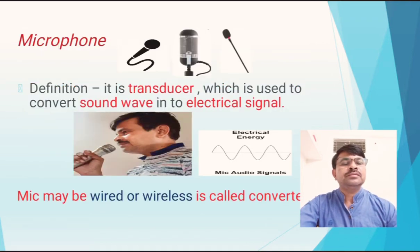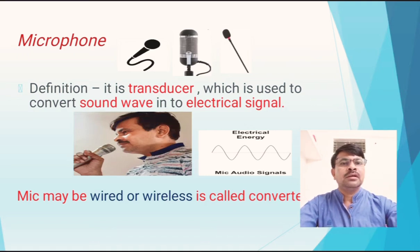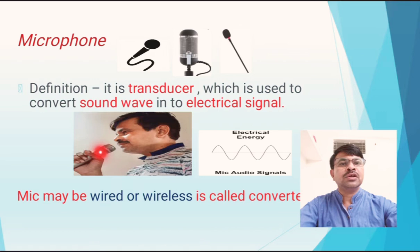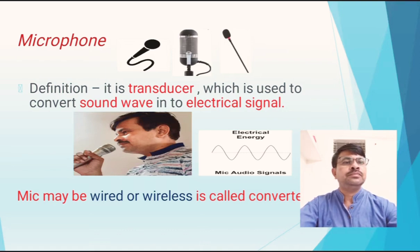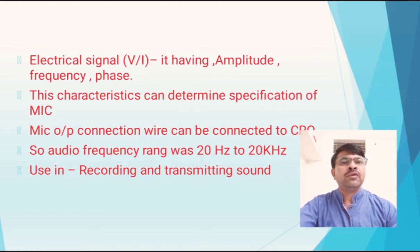Now we are moving to the second and important topic: the microphone. What is a microphone? A microphone is a device or transducer which is used to convert sound waves into an electrical signal. When I generate sound waves, the function of the microphone is to convert those generated sound waves into an electrical signal. As you see in the images, a microphone may be wired or wireless.